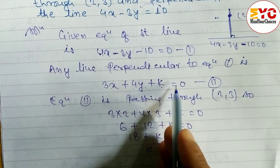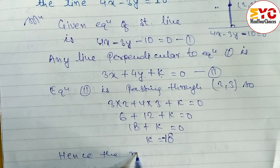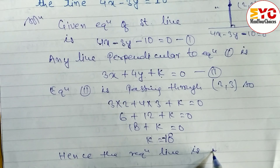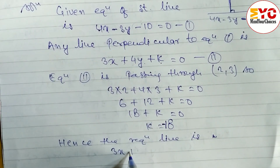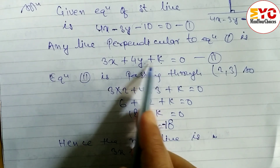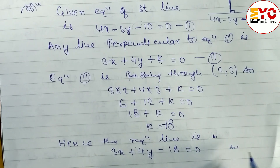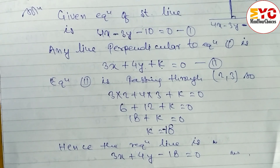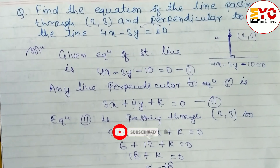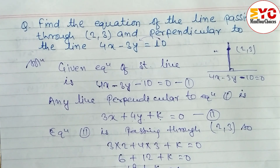We put the value of k back into equation 2. Hence the required equation is 3x plus 4y minus 18 equals zero. Hope you understand this problem related to coordinate geometry. If you understand, please hit the like button, subscribe if you are new, and hit the bell button so you get notifications of upcoming videos. Thanks for watching till the end — keep sharing, keep supporting.